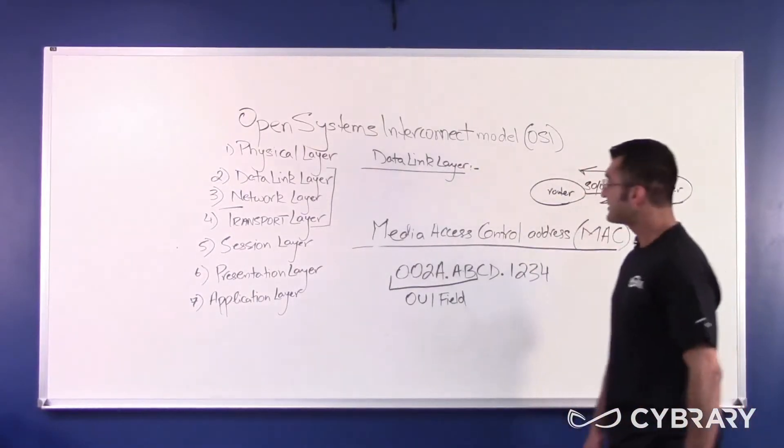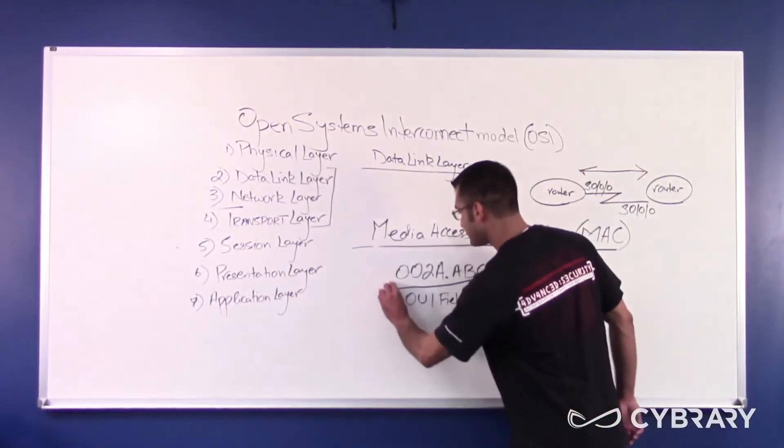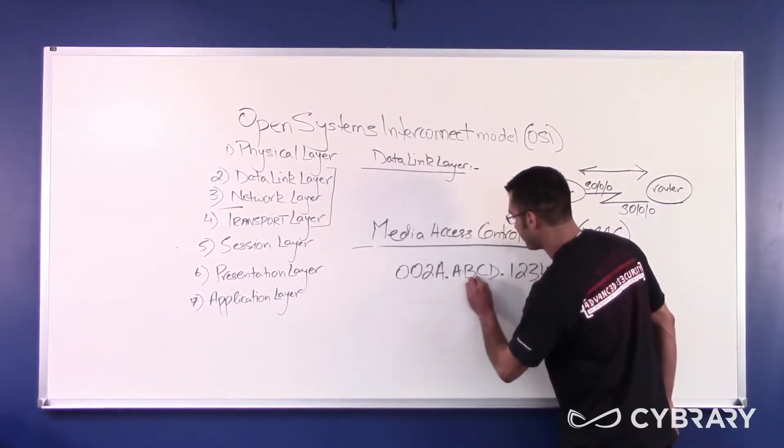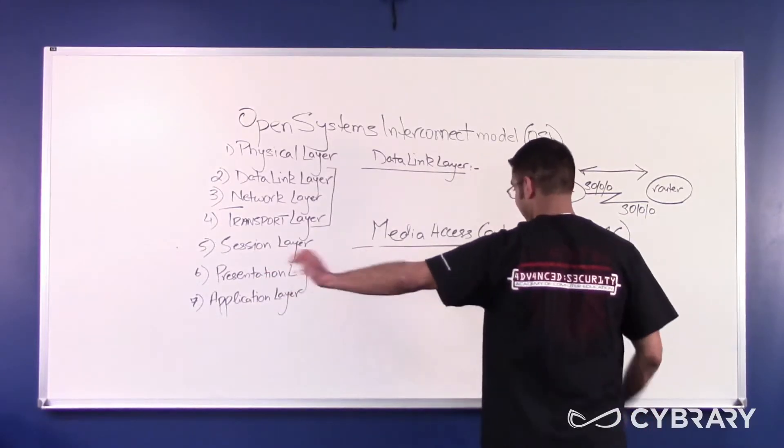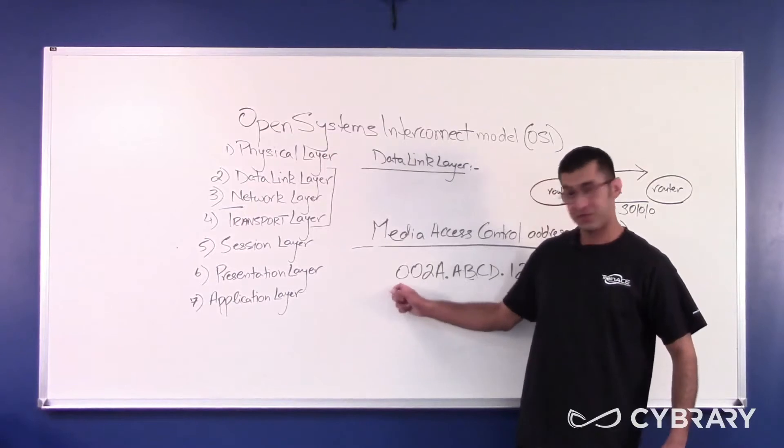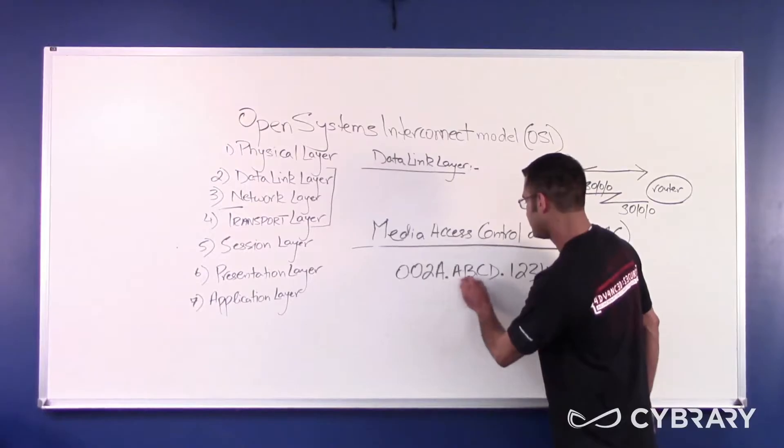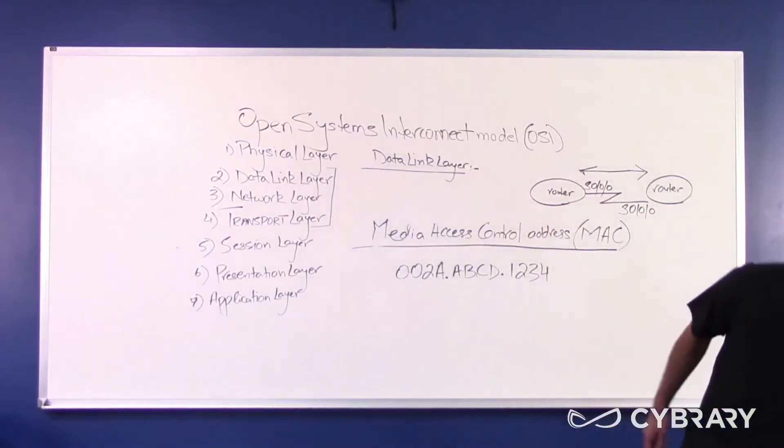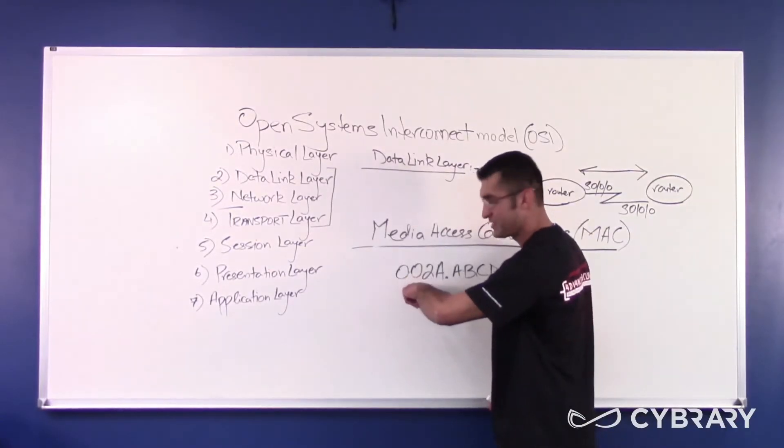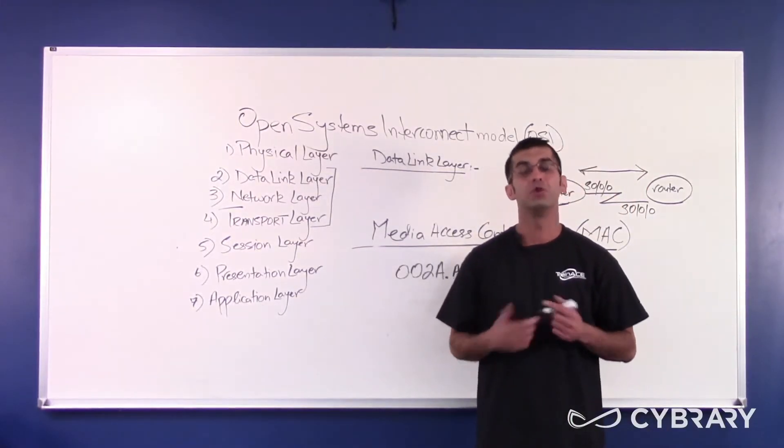The seventh bit of a MAC address, the seventh most significant bit—and whenever I use the language most significant I mean all the way to my left, or all the way to your right—the seventh most significant bit, which would reside in here because four bits here then five, six, and seventh bit, which would reside in here, is called the UL bit or the universal local bit.